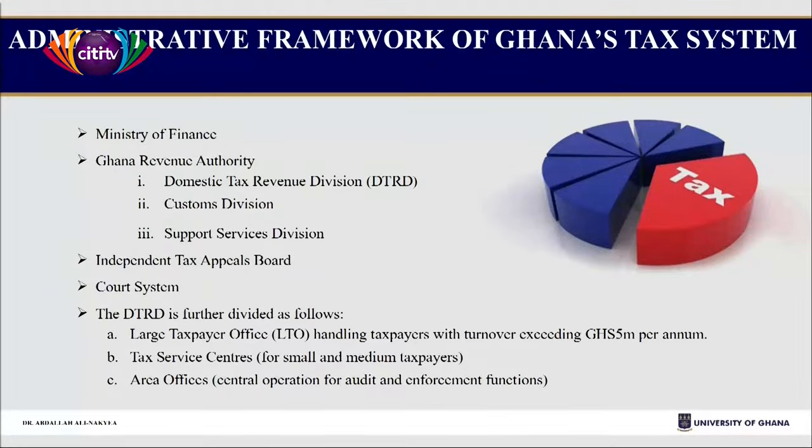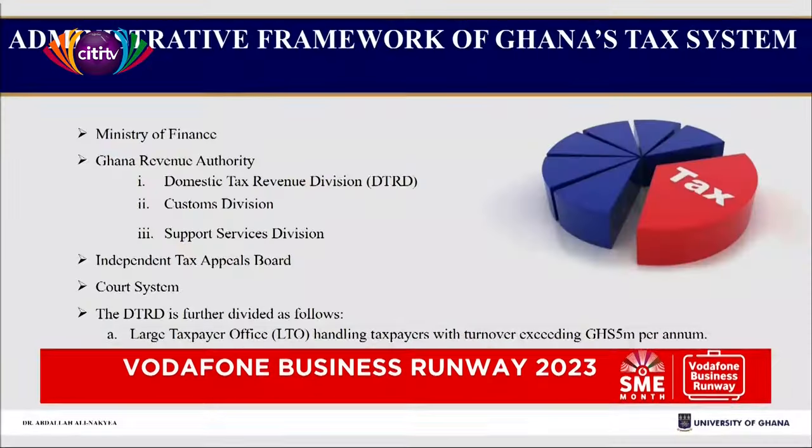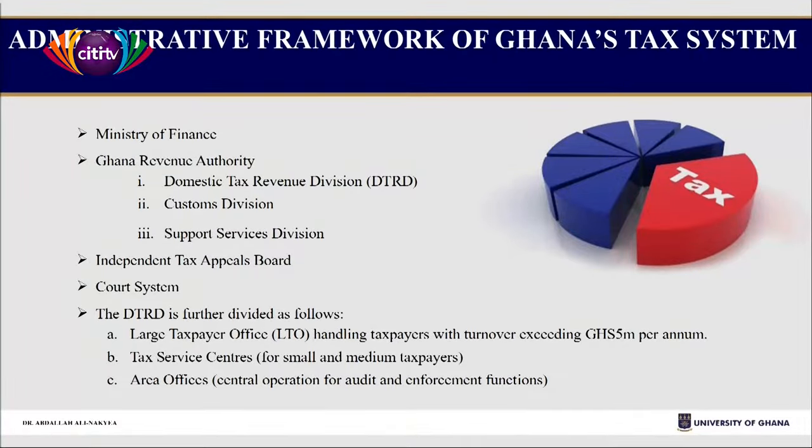Looking at the administrative framework, we have the Ministry of Finance as the overall supervising ministry that comes out with the tax policy. Then it will be administered by the Ghana Revenue Authority, which has three divisions: the Domestic Tax Revenue Division, the Customs Division, and the Support Services Division. We also have the Independent Tax Appeals Board, where you have an objection against a tax decision by the Commissioner General and appeal to be heard.